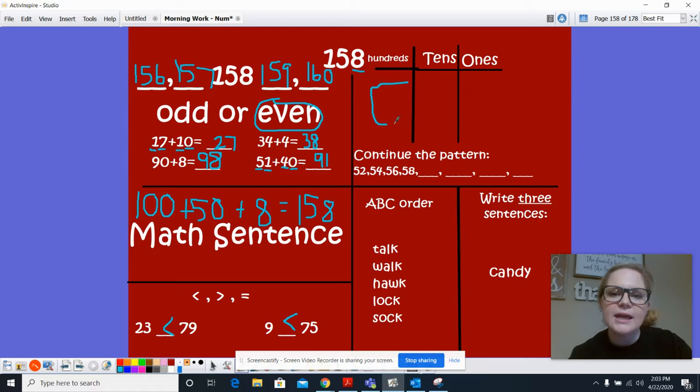We have 100. We have 5 tens. 1, 2, 3, 4, and 5. And we have 8 ones. 1, 2, 3, 4, 5, 6, 7, 8.